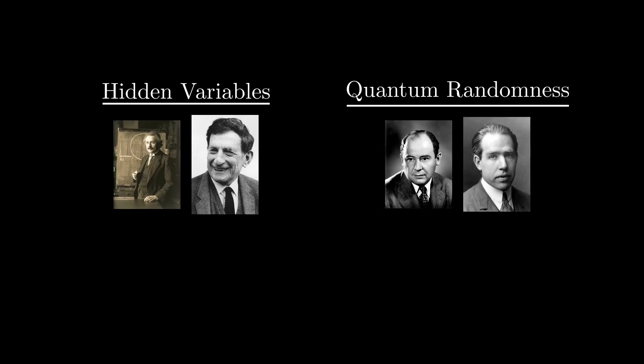But on the other hand, people like John von Neumann and Niels Bohr believed that quantum mechanics was inherently random, that there was no hidden variable, that there was no information that we didn't know, but rather that the information simply did not exist.